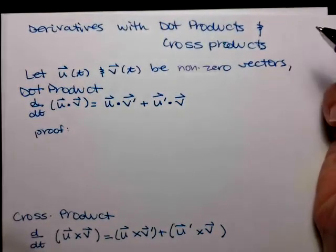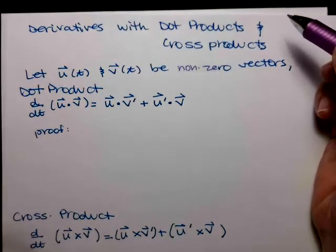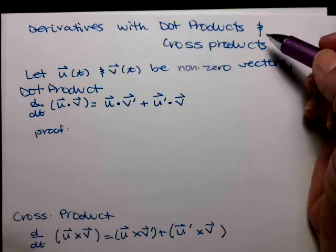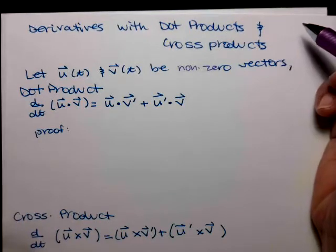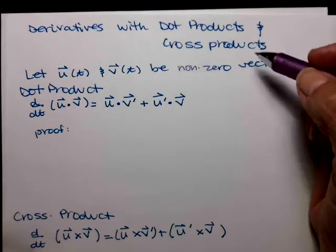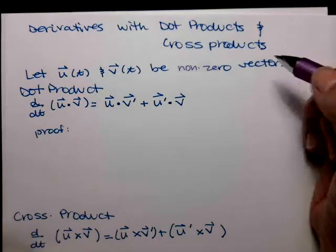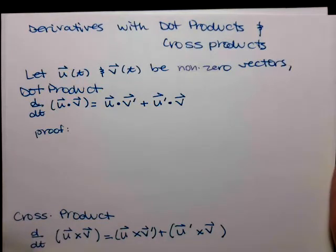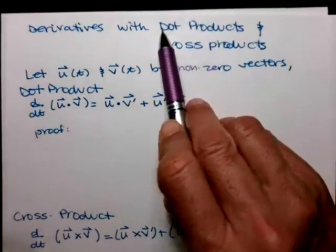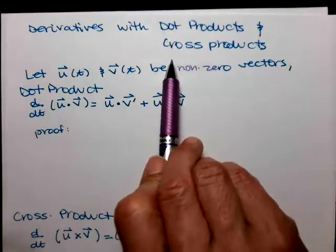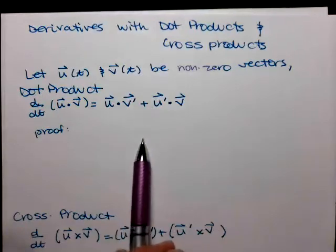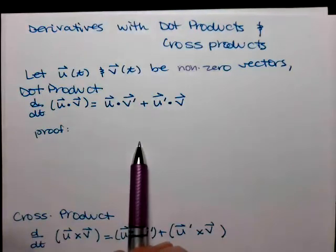With vectors, we've talked about how we can take the derivative if we have a scalar function multiplying a vector function, but what if I have a product of two vector functions? For vectors, we can do products with a dot product or a cross product, and they will have different versions of the derivative.